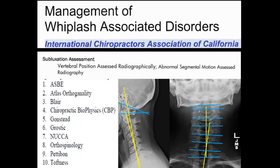The ICA Management of Whiplash Associated Disorders also tells us that vertebral position can be assessed radiographically, which traditionally corresponds to our techniques. Different techniques have different means by which they determine spinal subluxations on x-rays. The problem is that these techniques are not interrelatable — a Gonstead examination procedure yields different subluxation patterns than an Atlas Orthogonal, Blair, or CBP procedure. These procedures all have different methods by which they calculate spinal subluxations, which is confusing to the outside world as to how spinal subluxation is actually assessed.